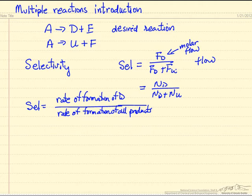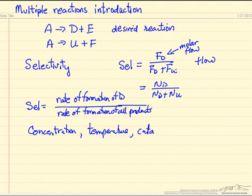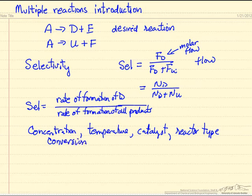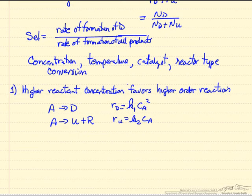And selectivity then is affected by concentration of reactants, affected by temperature, affected by which catalyst is used for the reaction, and catalysts change selectivity significantly. It's affected by the type of reactor, since the type of reactor affects concentrations or the mode of reaction of the reactor. It's also affected by how much reaction, what is the conversion. If we have 90% total of our reactant used up, we likely have a different selectivity than if 10% is used up.